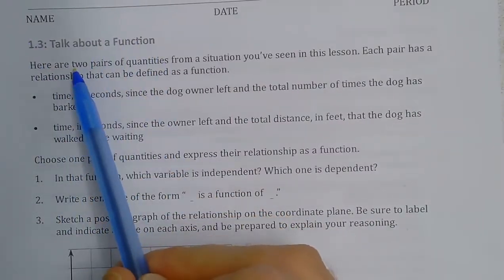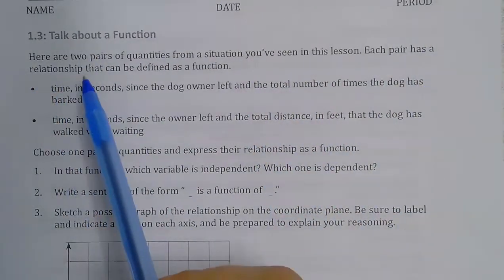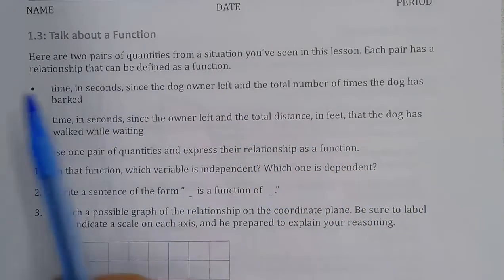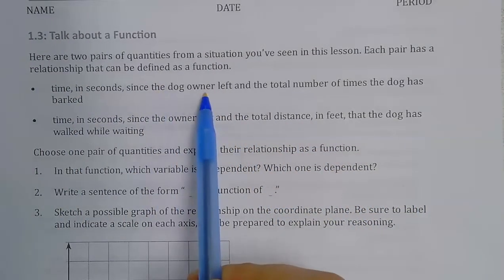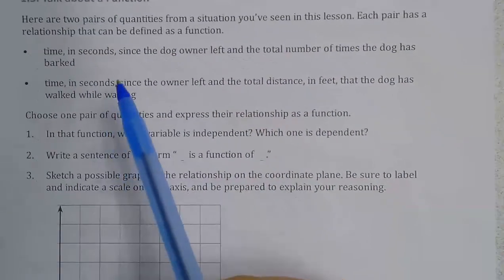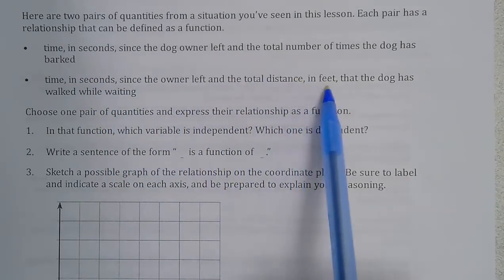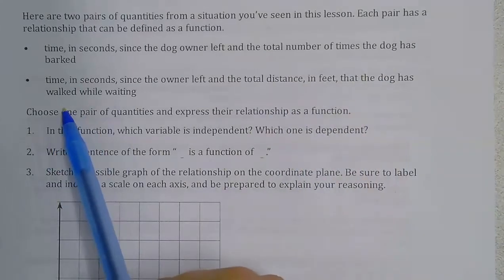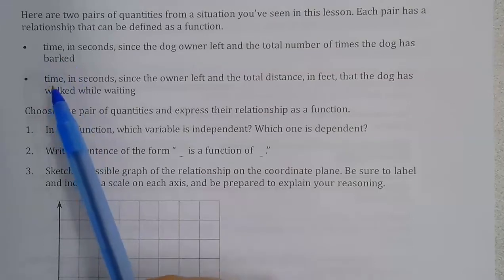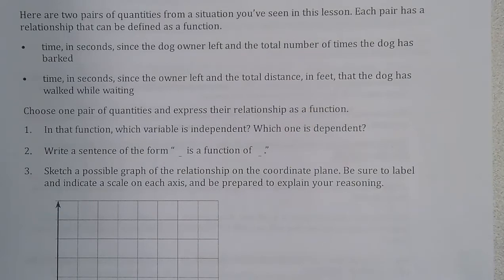So now we're going to talk about a function. Here are two pairs of quantities that we saw in the last lesson. Each pair has a relationship that could be defined as a function. We have time in seconds since the dog owner left and the total number of times the dog has barked, and time in seconds since the owner left and the total distance in feet that the dog has walked. So choose one pair of quantities and express the relationship as a function.